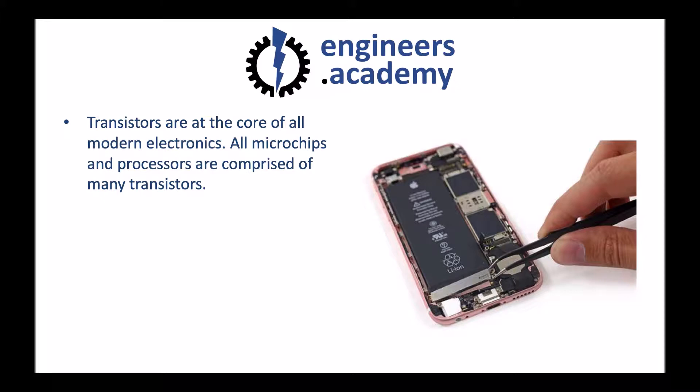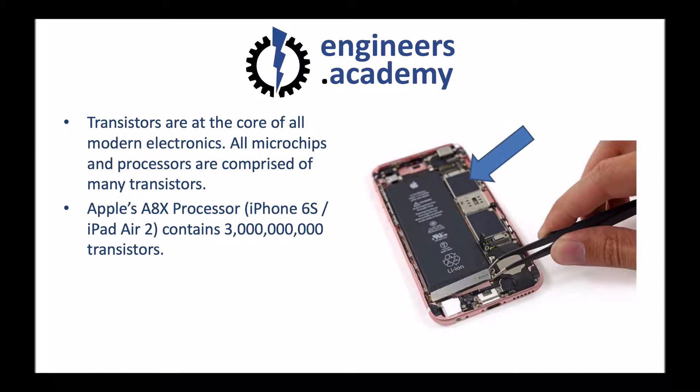Transistors are just about everywhere now and they're at the core of all modern electronics. All microchips and processors are comprised of many transistors. For example, the iPhone 6s processor contains around 3 billion transistors housed in a small chip. Transistors are now compressed into very tiny spaces. Another example: the Xbox One has a processor that contains around 5 billion transistors. Fortunately, we're going to take things very simple to start off with and look at one transistor in isolation and how it works.